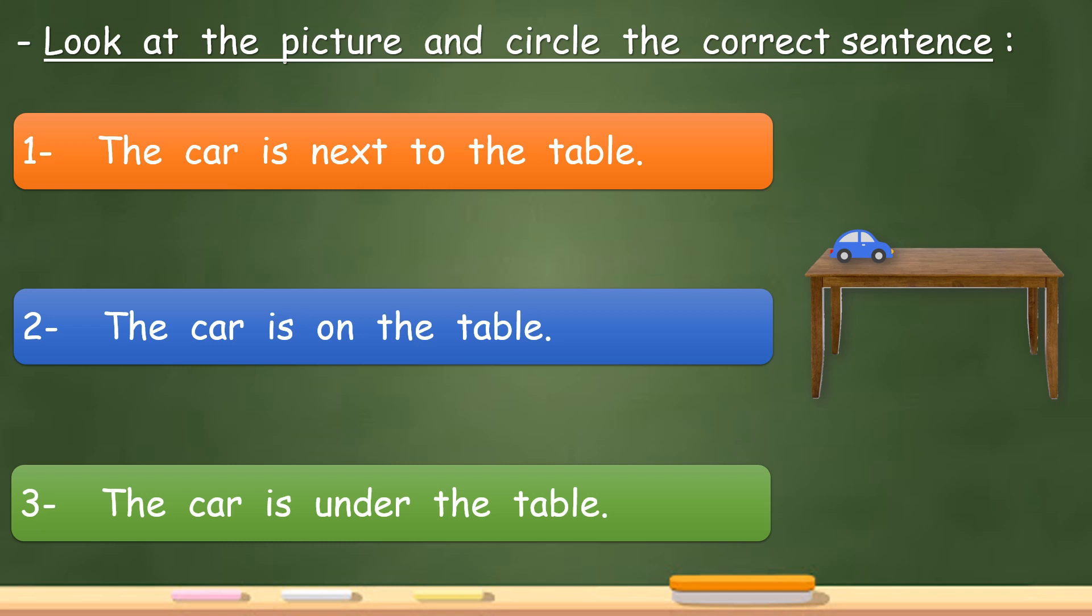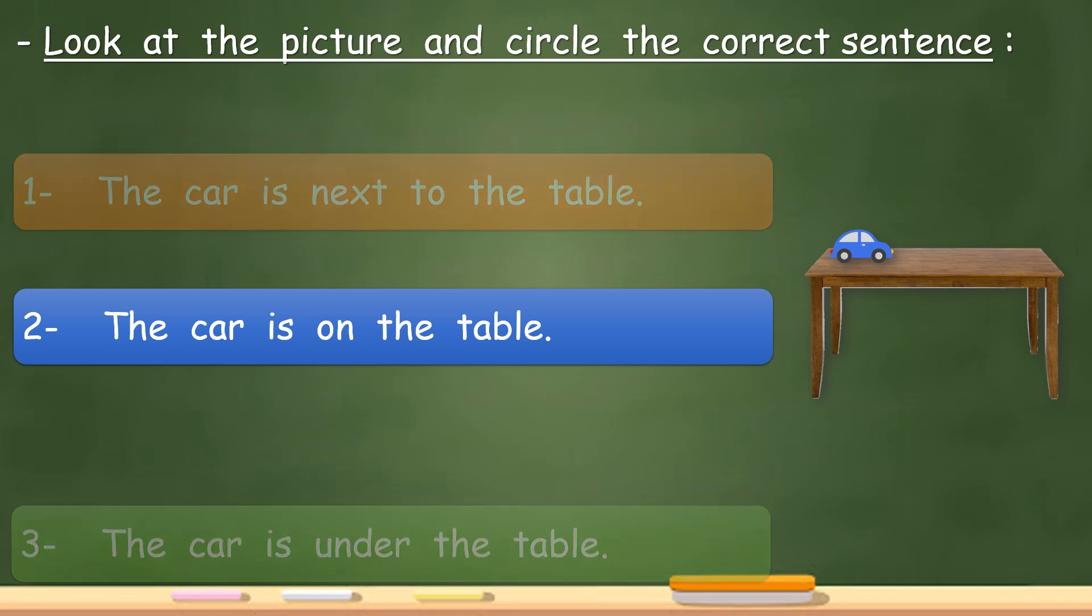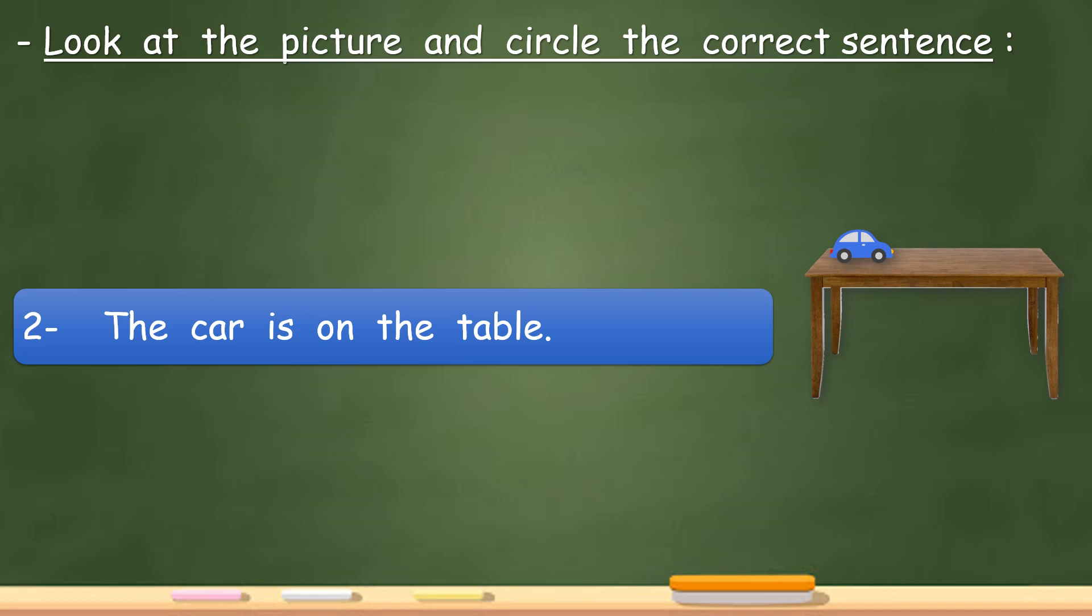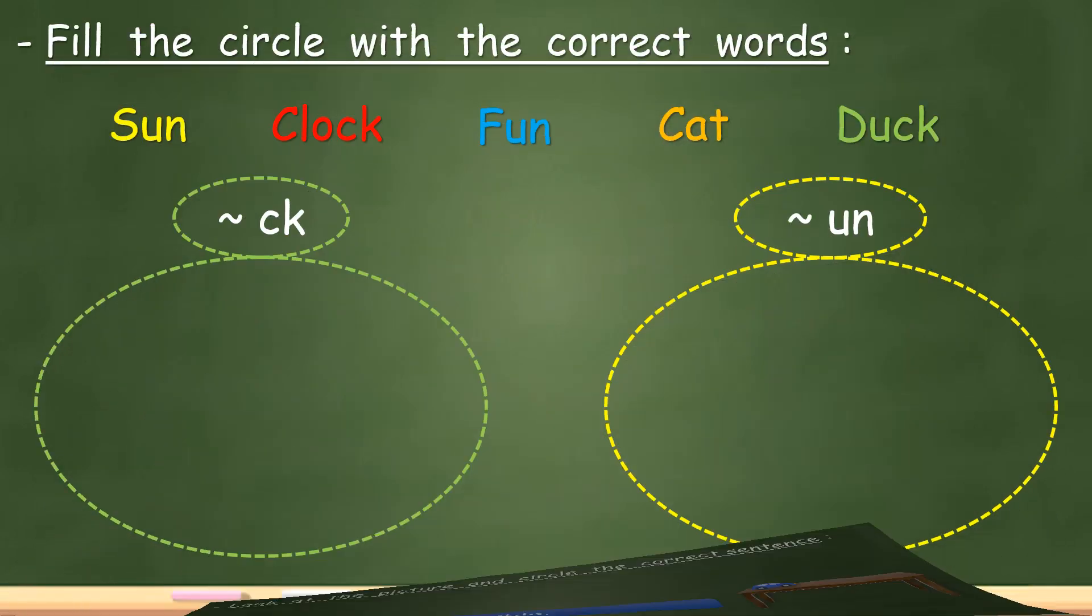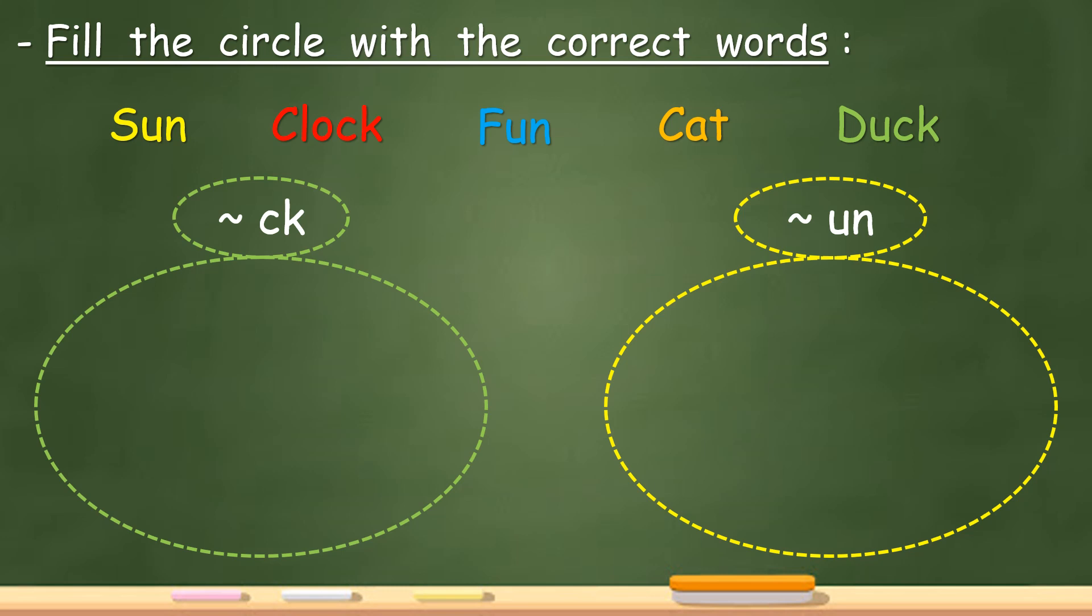Now fill in the circle with the correct word. Un: sun, clock, fun. Cat, nowhere, and the last one: duck. So we have clock and duck, the same sound. Sun, fun, the same sound.